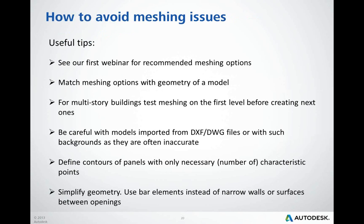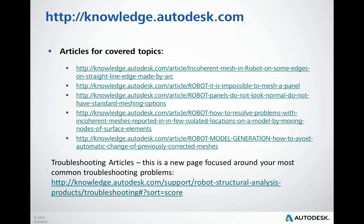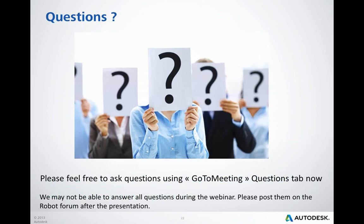Let me finish this presentation with a couple of useful tips. I encourage those who haven't watched our first webinar to look at it on YouTube and learn how to set the correct meshing parameters to avoid meshing issues in the first place. I'd also like to introduce the Autodesk Network site where you can find useful articles on the topics covered during this webinar as well as many others. Please post your questions on the GoToMeeting questions tab — we may not be able to answer all of them during this webinar, but please post any unanswered ones on the Robot forum after the presentation.